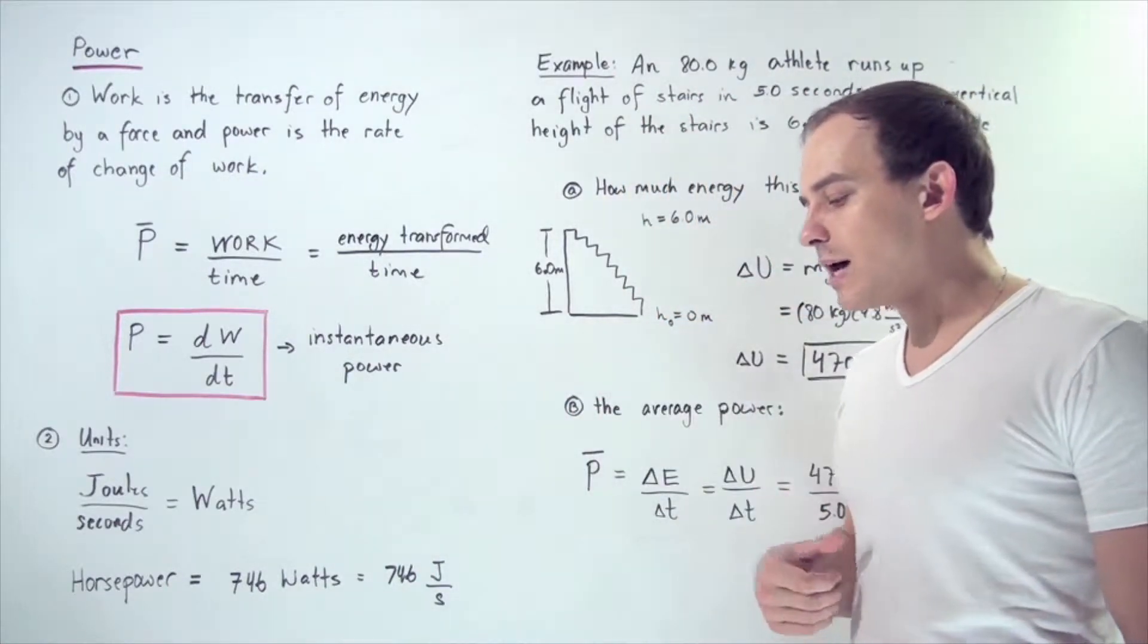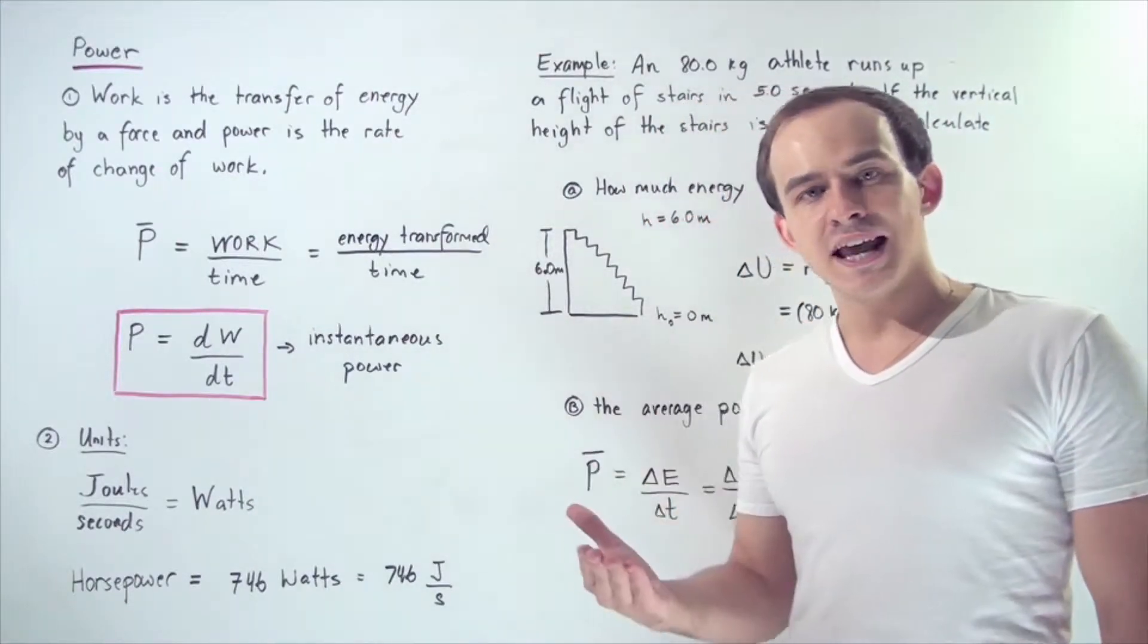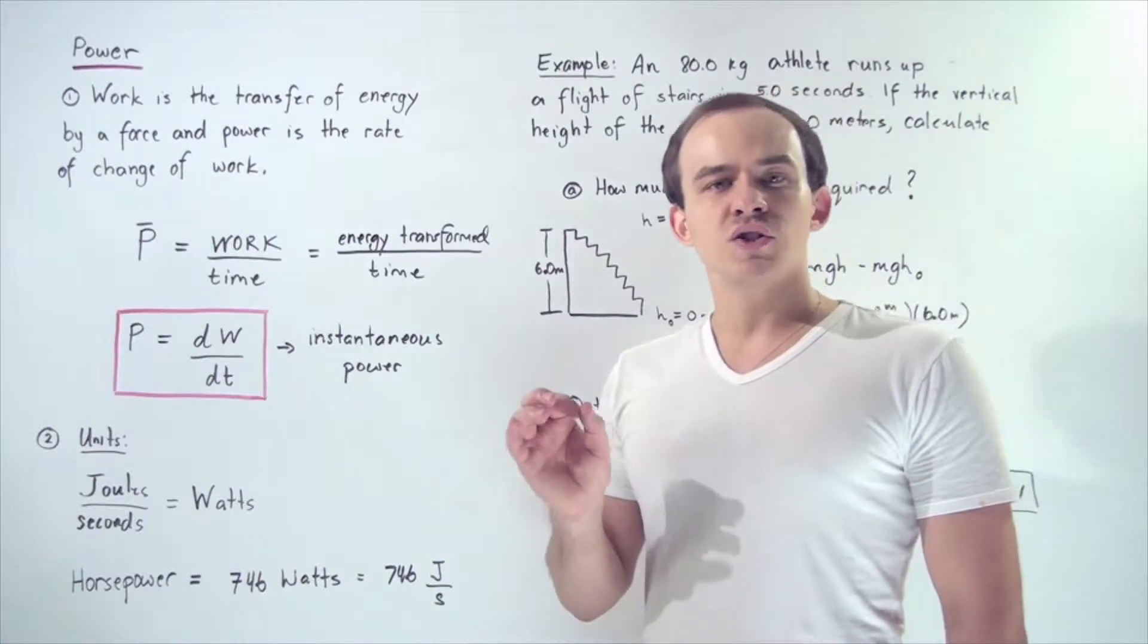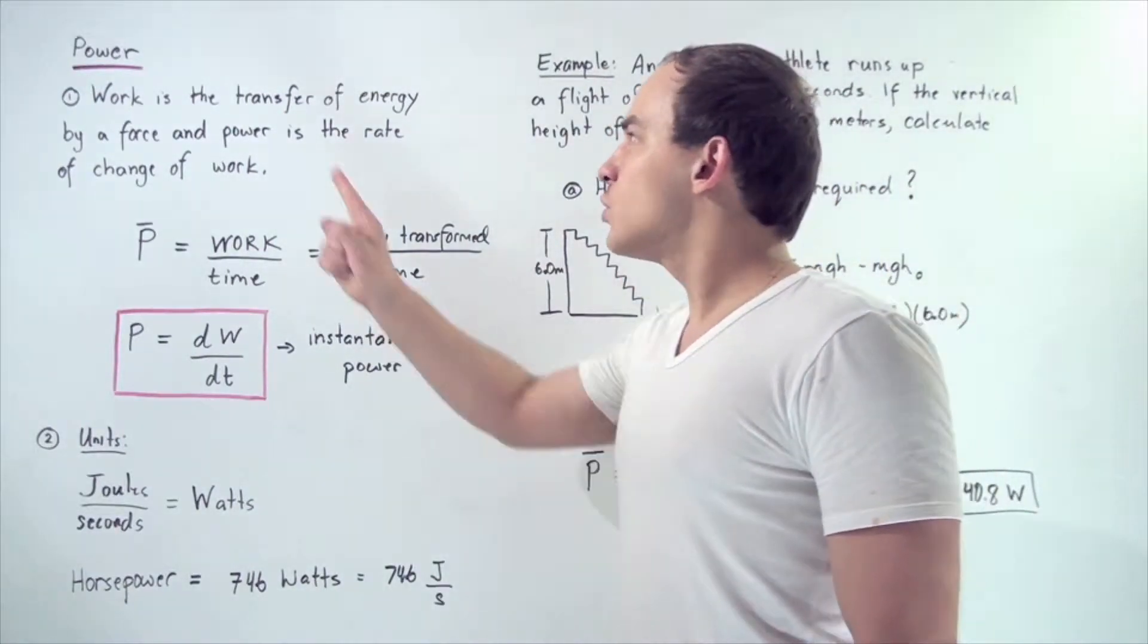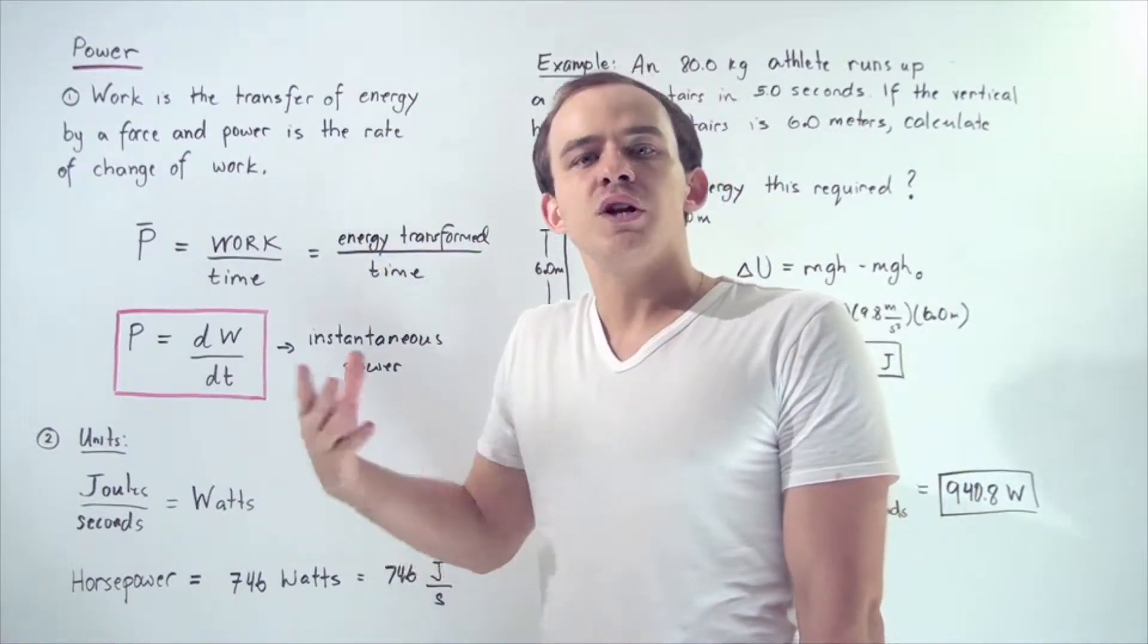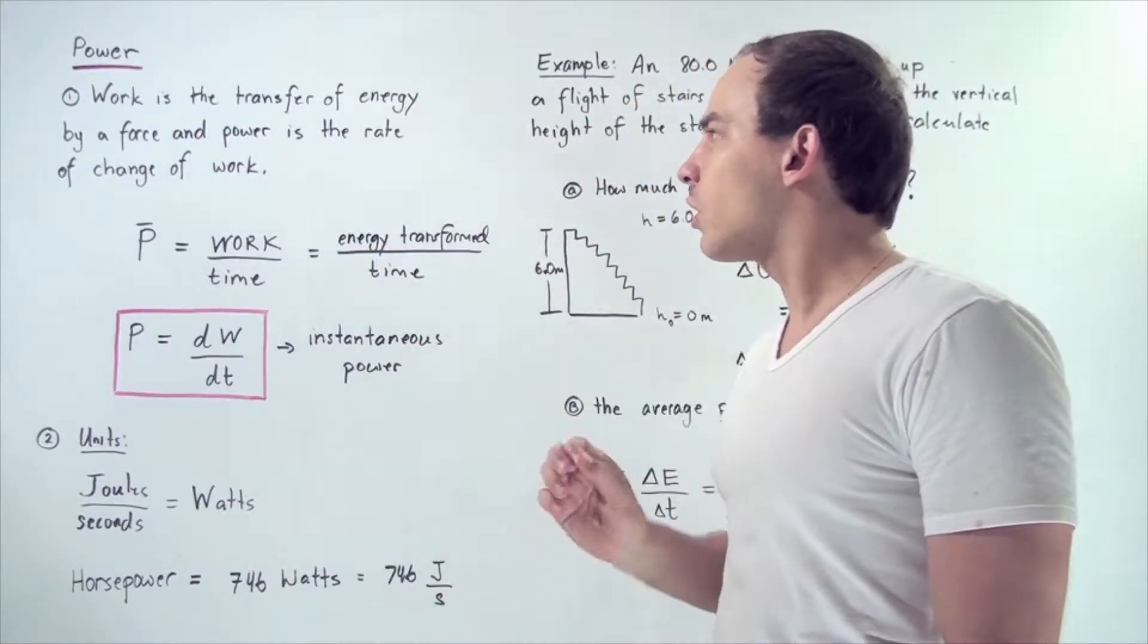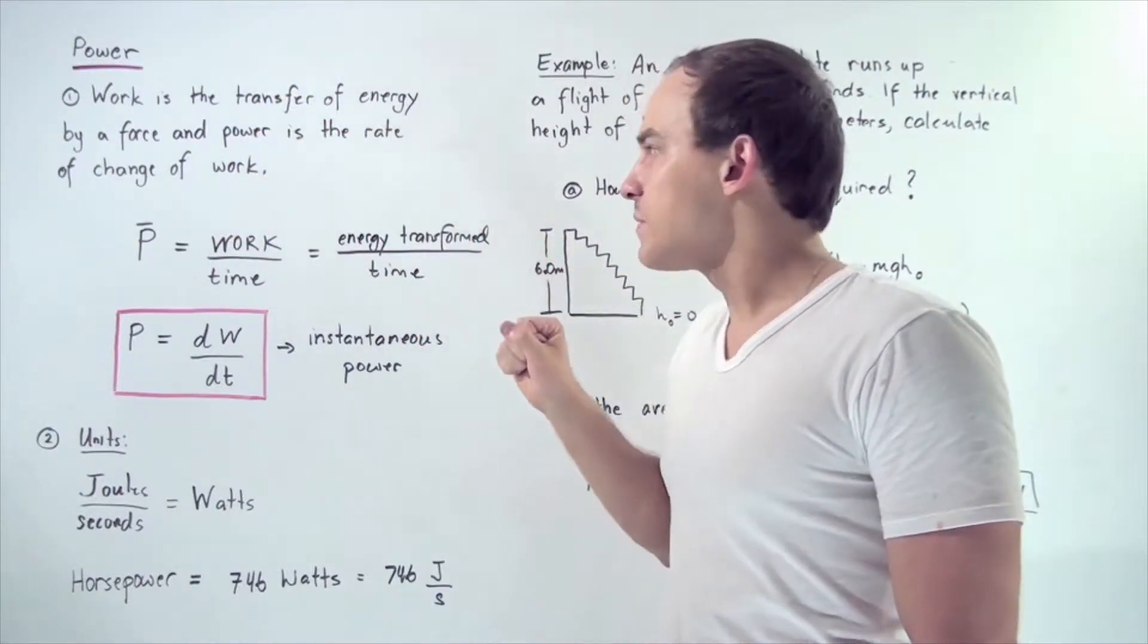In the same way that we can talk about average and instantaneous velocity and average and instantaneous acceleration, we can also talk about average and instantaneous power. Work is the transfer of energy from one form to another by the use of a force, and power is the rate of change of that work done.